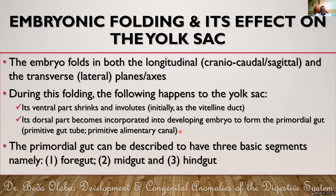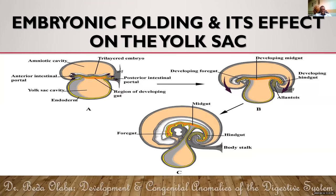The primordial gut can be described as having three basic parts: the foregut, the midgut, and the hindgut. The ventral part of the yolk sac becomes smaller with the vitelline duct connecting it, while the dorsal part becomes incorporated into the embryo as the primordial gut — the primitive alimentary canal — extending from the cranial end to the caudal end, with the three segments clearly identifiable.